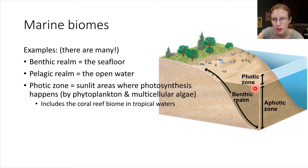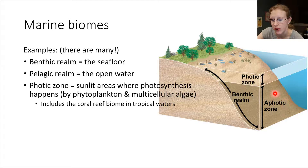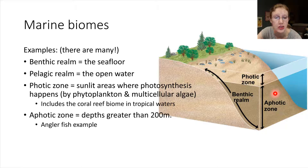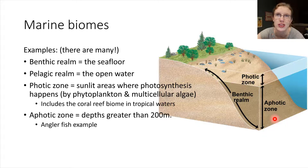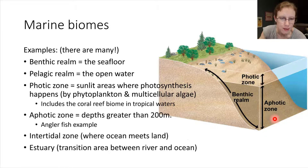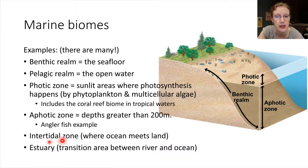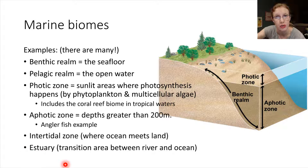Going deeper than the photic zone, we reach the aphotic zone — the prefix 'a' meaning 'not photic.' This is a region where light does not penetrate, generally at depths greater than 200 meters. There are many unusual living things in the aphotic zone. Other marine biomes include transition areas: the intertidal zone, where the ocean meets the land, and an estuary, which is the transition from a river to an ocean.